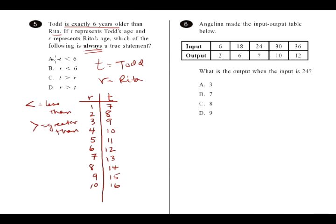So, the first choice says, T is less than six. Todd is less than six years old. Well, not in any of these cases, so that's not always going to be true. Cross that one off.